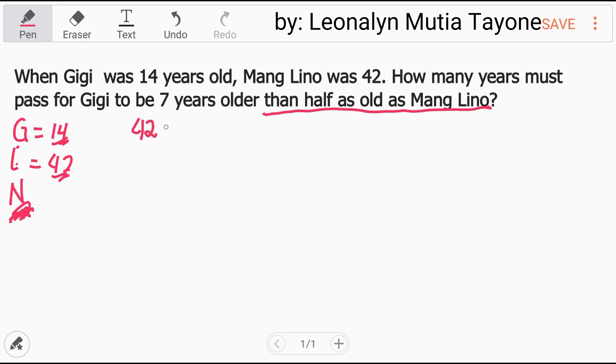Mang Lino's age is 42 plus N. Half of that age - 42 plus N is his age - divide by 2, plus 7. That's Gigi's age at that time, and we'll equate that to Gigi's actual age, which is 14 years old plus N years. That's the equation for this problem.